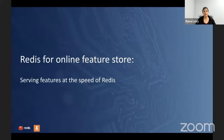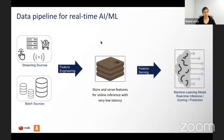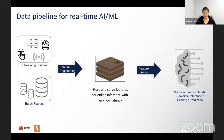Let's talk about Redis for online feature stores — serving features at the speed of Redis, in memory, as a key-value store. This is a typical data pipeline for real-time AI. We have raw data coming in — batch sources from your data warehouse and, most importantly, streaming sources: live, fresh data such as click streams, IoT sensor data, server logs, and transactions. All of that raw data goes through transformation in what we call feature engineering, and we need to extract, transform, and load it into fast online storage to serve features for online inference with very low latency.